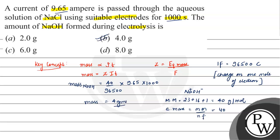So the correct option is B, 4 grams. Hope you understood it well. Best of luck.